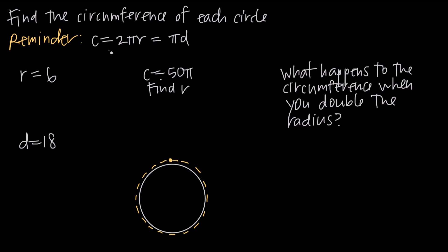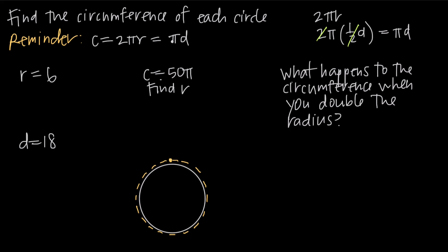The formula for circumference is C equals 2πr, where r is the radius of the circle. Since r is half of the diameter, if we replace r with one half of the diameter, the 2 and the one-half cancel, leaving us with C equals πd — pi times the diameter. So you can use either C equals 2πr, where r is the radius, or C equals πd, where d is the diameter.